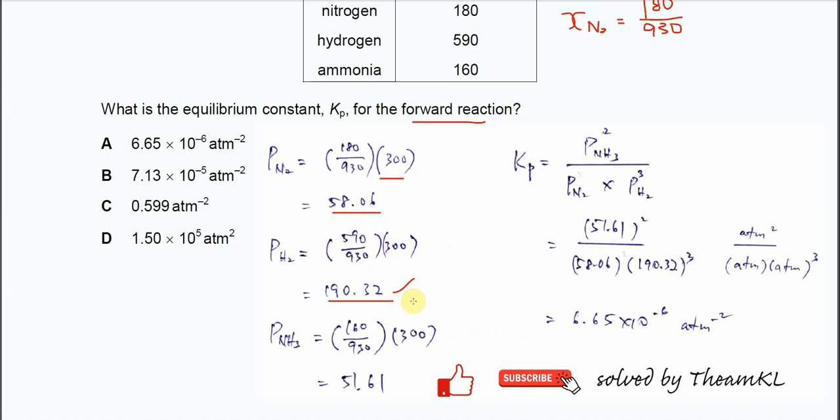For the partial pressure of ammonia, use a similar calculation. 160 over total moles times 300 gives you 51.61.